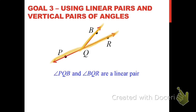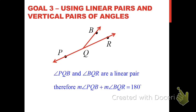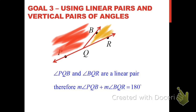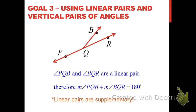We've used a picture like this before. Because angle PQB and angle BQR have two sides that form opposite rays, their opposite sides form a straight angle, and so there's 180 degrees split between those two angles. The measure of angle PQB plus the measure of angle BQR equals 180 degrees. That's true for every linear pair of angles — another way of saying it: linear pairs of angles are always supplementary.